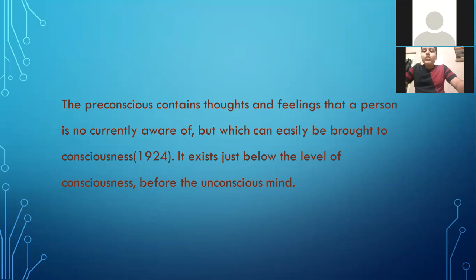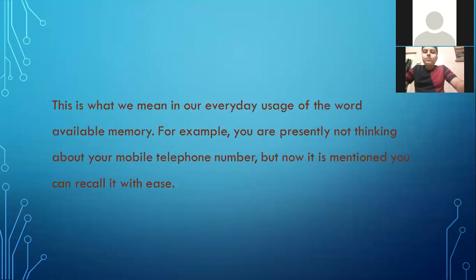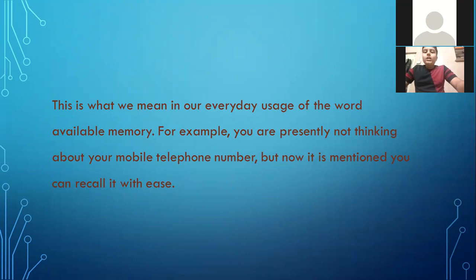The pre-conscious mind or subconscious mind contains thoughts and feelings that a person is not currently aware of, but which can easily be brought to consciousness — as said by Sigmund Freud in 1924. It exists just below the level of consciousness before the unconscious mind. That is what we mean in our everyday usage of the word available memory. For example, you are presently not thinking about your mobile telephone number, but now that it is mentioned, you can recall it with ease.